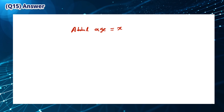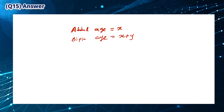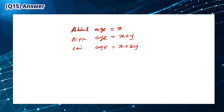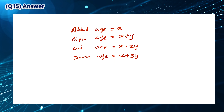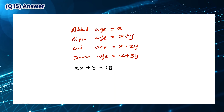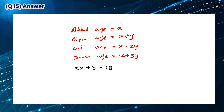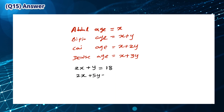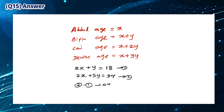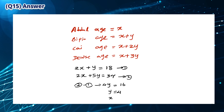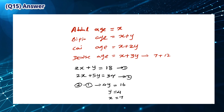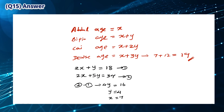Let Abdul's age be x and Bipin's age be x plus y, where y is the common age difference. Kai's age is x plus 2y and Denise's age is x plus 3y. Abdul and Bipin's ages add up to 18, giving 2x plus y equals 18. Kai and Denise's ages add up to 34, giving 2x plus 5y equals 34. Subtracting gives 4y equals 16, so y equals 4 and x equals 7. Denise's age is 7 plus 12, which is 19. The answer is D.